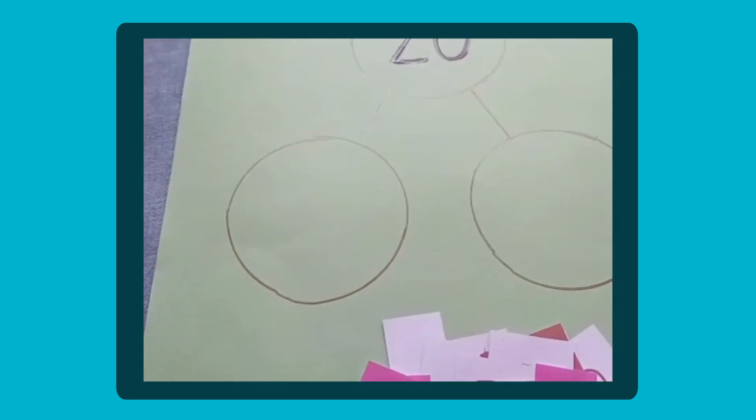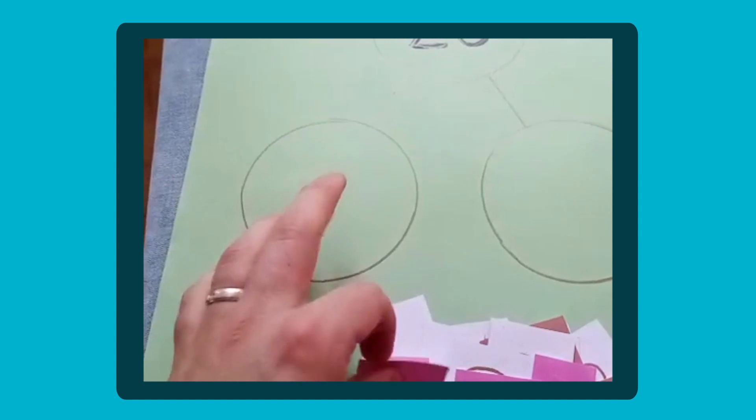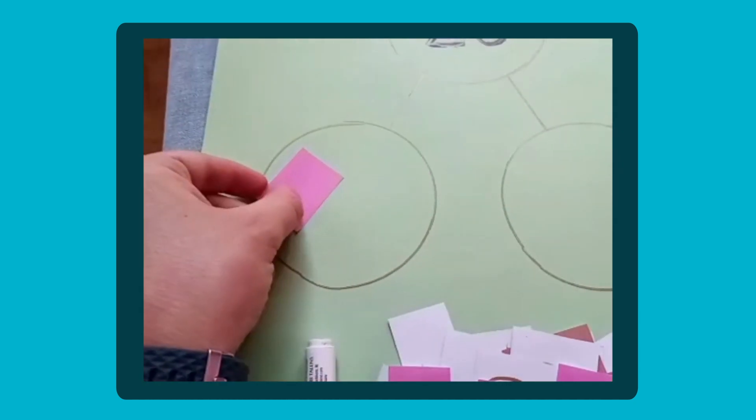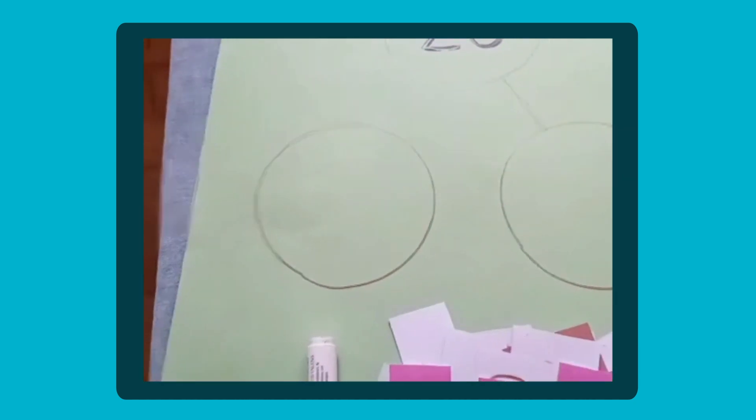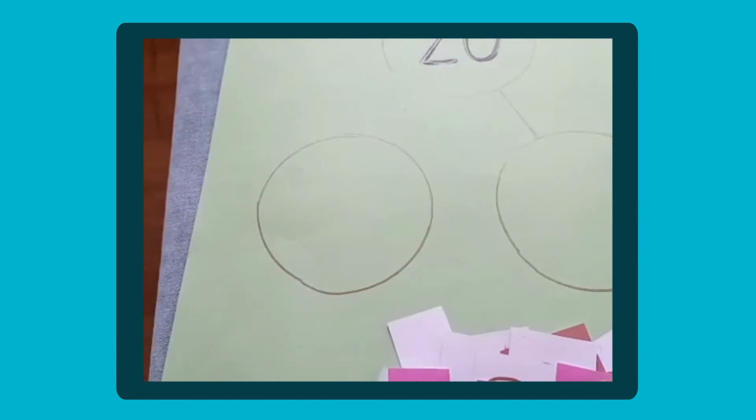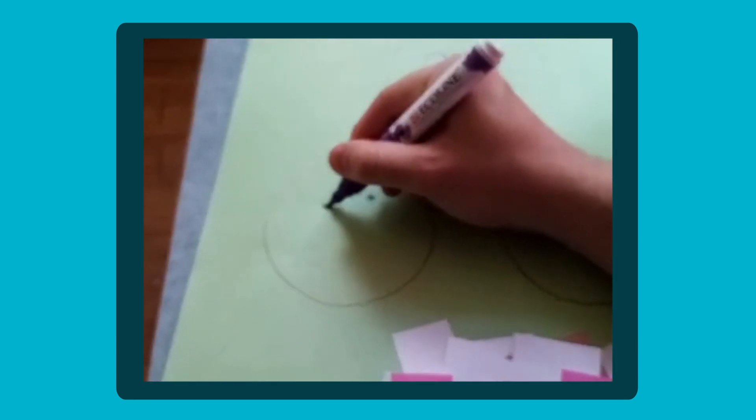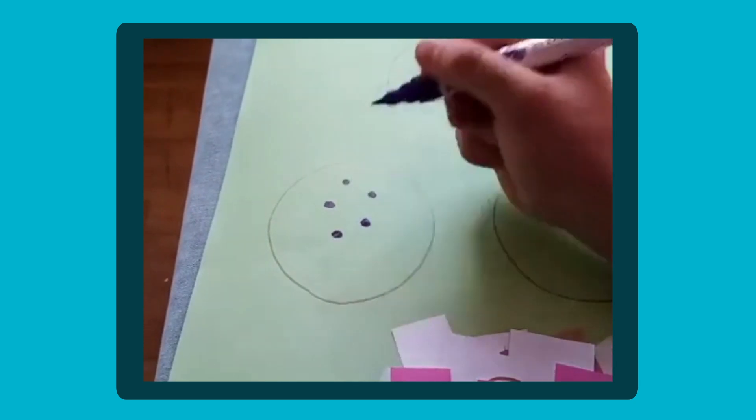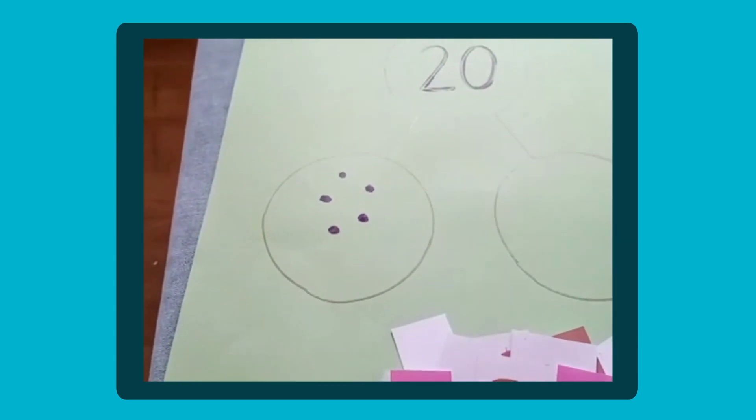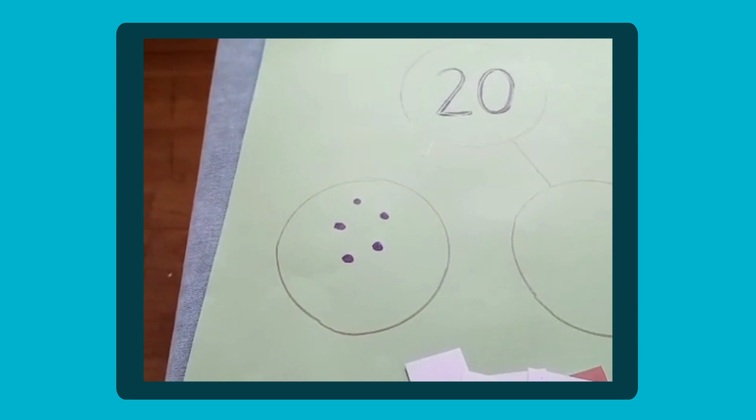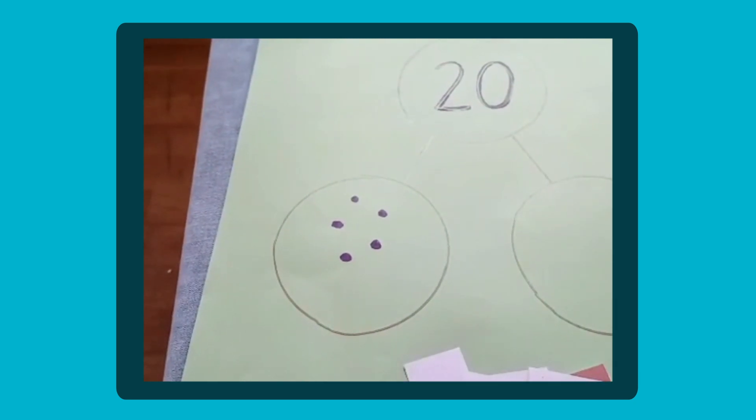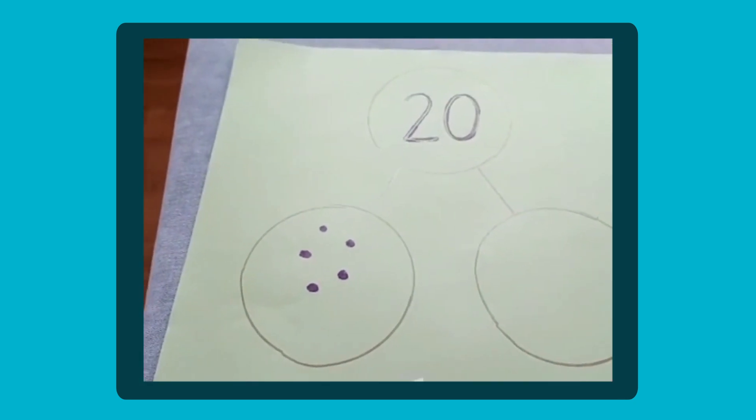You could do all sorts of different games with this. You could use the same counters if you made it big enough. You could use the same counters to try and add up to twenty. Or you could just challenge and do dots and just say if I have five dots there how many dots am I going to need to draw in this one. And then children can count the total of them together to decide if what they have makes twenty or not.